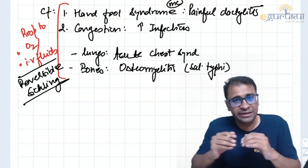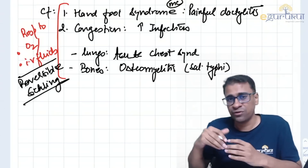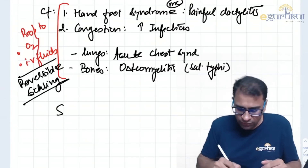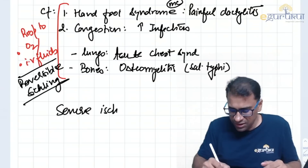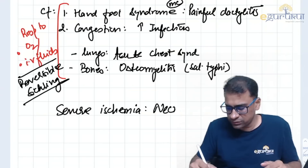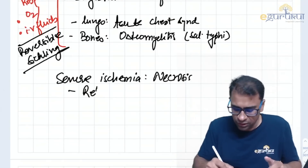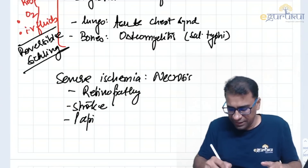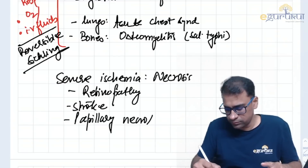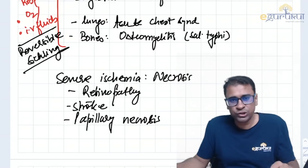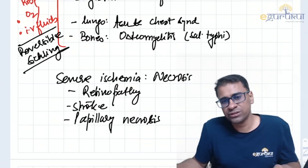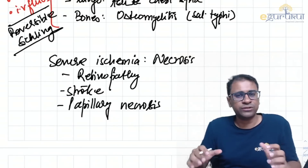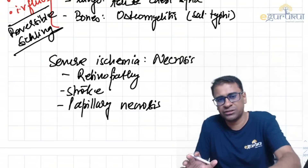If ischemia becomes more severe, it leads to necrosis. Severe ischemia can cause necrosis to the retina causing retinopathy, to the brain causing stroke, and to the kidney causing papillary necrosis. Eventually it can lead to massive necrosis of the spleen and other organs, causing damage to most of the body organs.